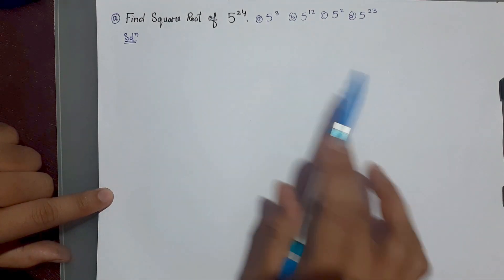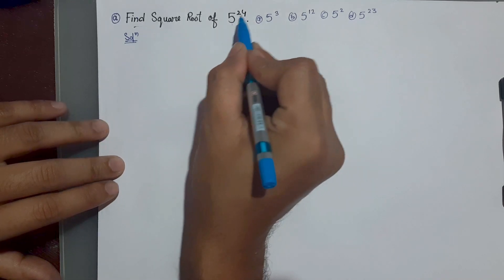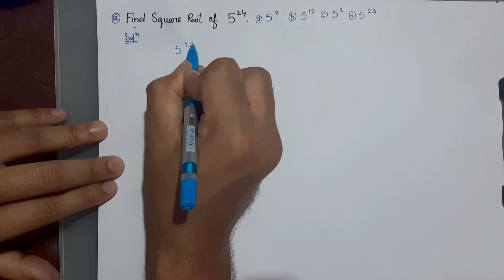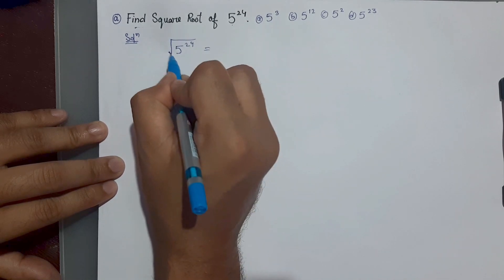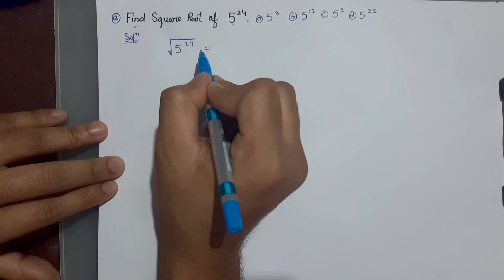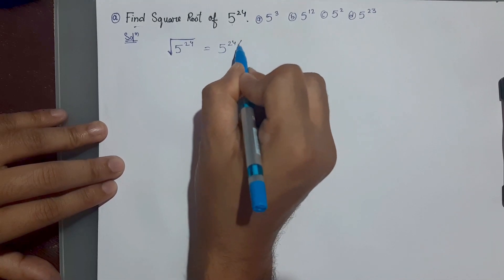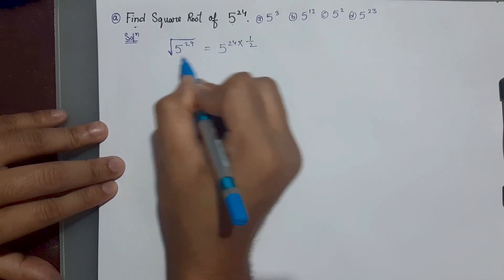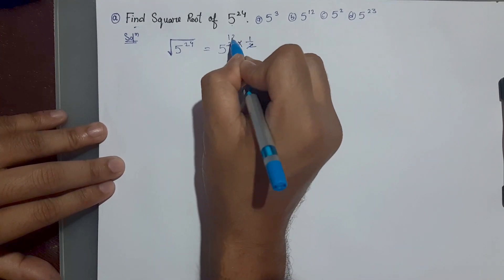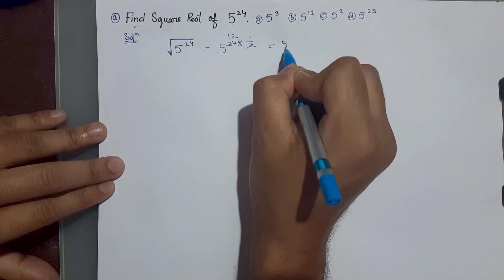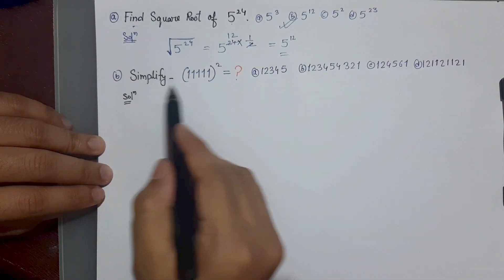Hello guys, welcome to my channel. Let's solve some problems with tricks for competitive exams. Here we need to find out the square root of 5 to the power 24. We know square root implies half power, so we write 24 into 1/2. We cancel out the 2, giving us 5 to the power 12. So the answer is 5 to the power 12.